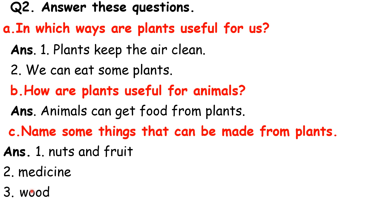Three: wood — we can also get wood from plants and make furniture and different items. Four: perfumes — different types of perfumes are made from plants. Also, birds make their homes on plants. Plants also provide shade and furniture. Do this work in your notebook and also learn it. Thank you.